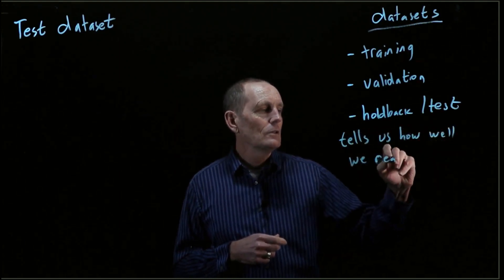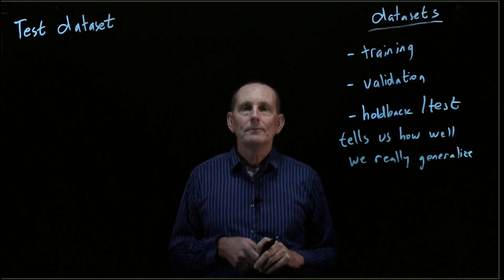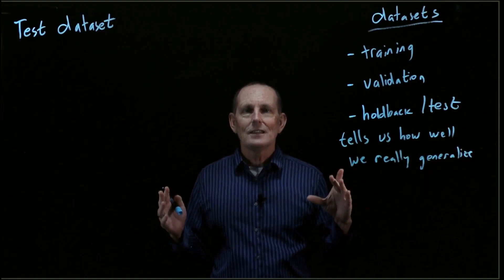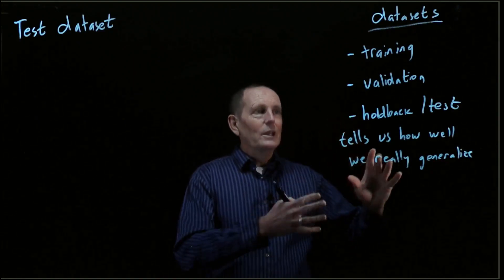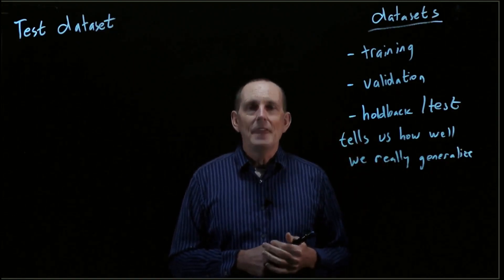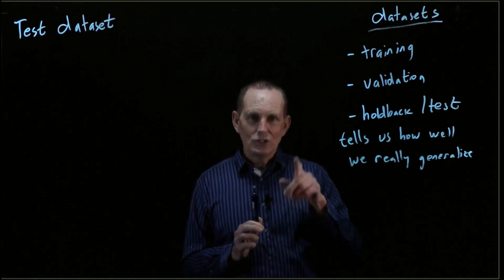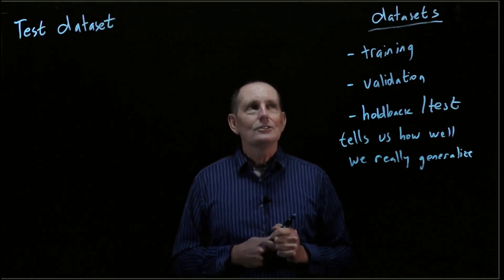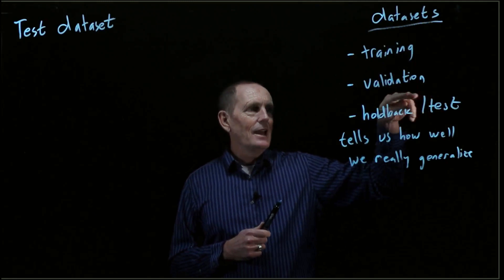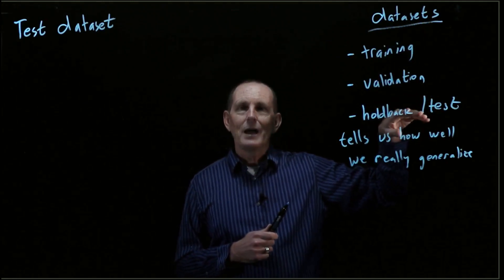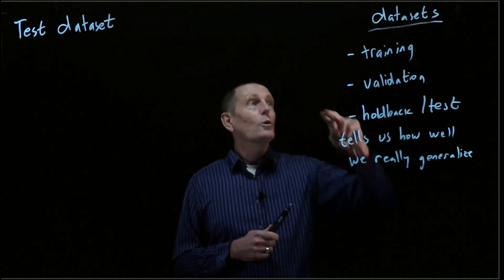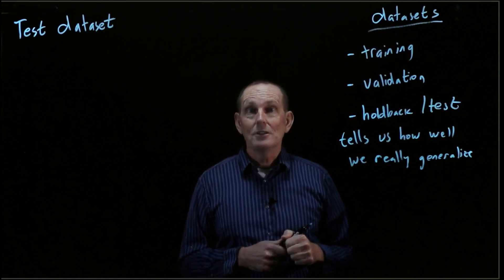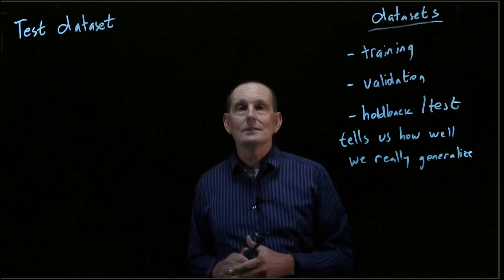So we get to the very end, we unlock our vault, we take out this test data set, we see what our loss is — and we never use it again. We just get to use it once. We don't get to run it, find the result isn't as good as we wanted, go iterate again, and then test the holdback again. No — if you wanted to do that, you'd need to have put aside two holdback data sets.